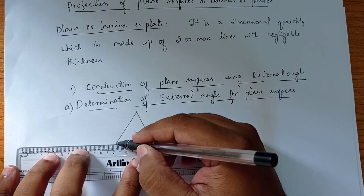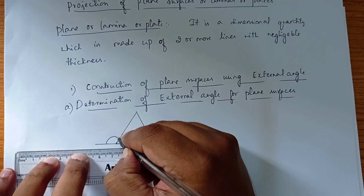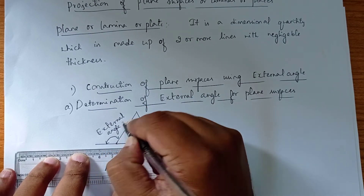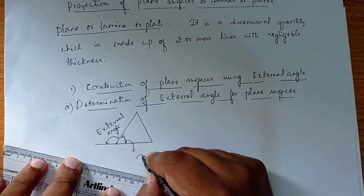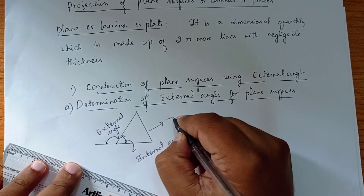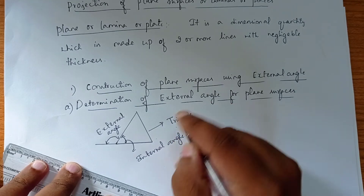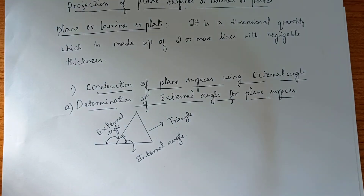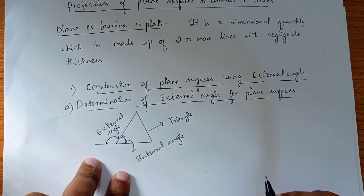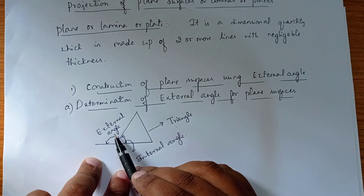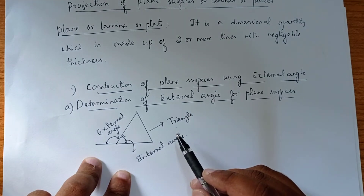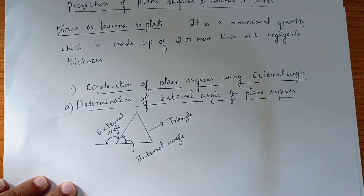So any triangle or any plane surface consists of two types of angles: internal and external. But for the construction of plane surfaces in this module, we are going for the external angle. Before construction, we should know the external angle of each plane surface.